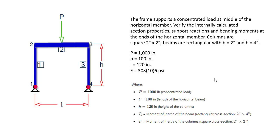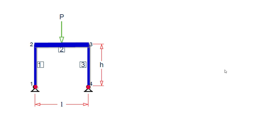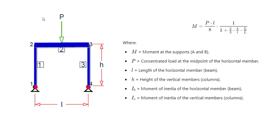Then we will switch to the STAAD part in order to work out the reaction and moment values. The modeling is very simple — we have height, length, and load value. Now let's understand the equation for this particular symmetrical geometry. The moment equation is in terms of WL by 8, and 1 divided by 1 plus 2/3 of H by L with the ratio of inertia. This equation is used to calculate the moment at the supports of the symmetrical portal frame subjected to the concentrated load at the midpoint of its horizontal member, incorporating the stiffness properties of both horizontal and vertical members.